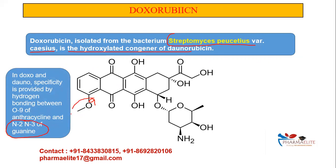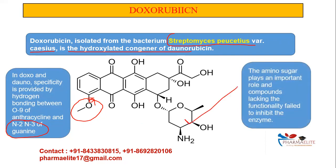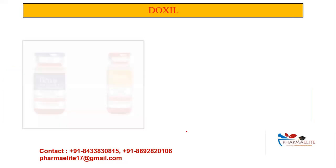The amino sugar is very, very important. If the amino sugar is lacking, the drug would fail to inhibit the enzyme — meaning topoisomerase 2 would not be inhibited. So the amino sugar is essential for the mechanism of action.